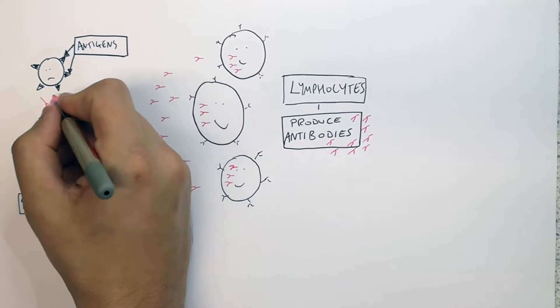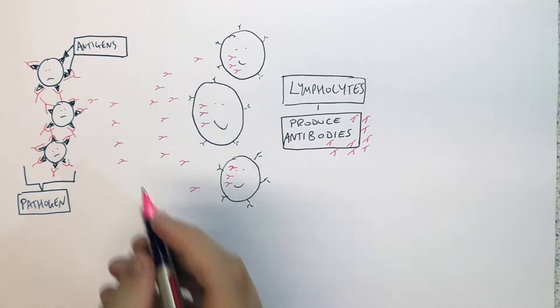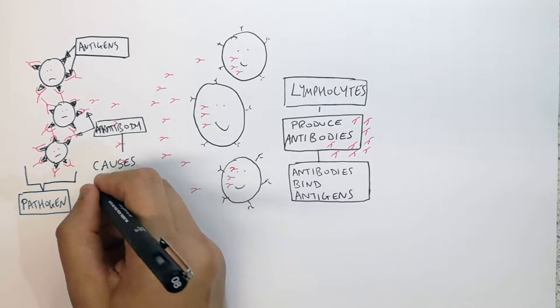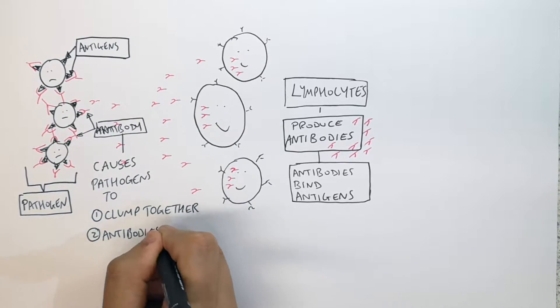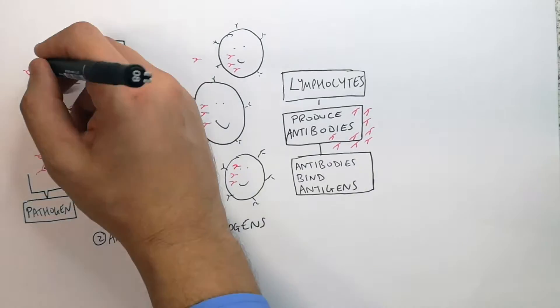These antibodies are going to bind the antigens of that pathogen. So these antibodies cause the pathogens to number one, clump together. Number two, the antibodies will kill the pathogens.